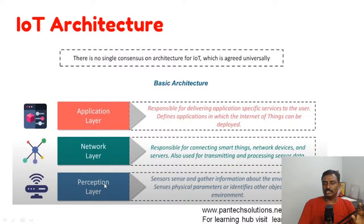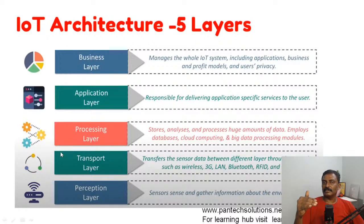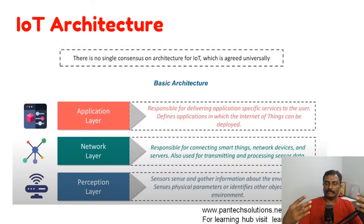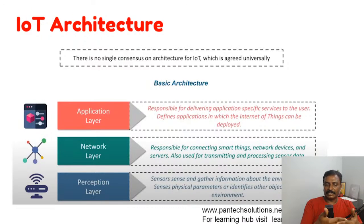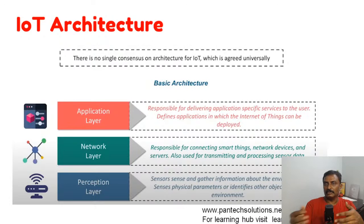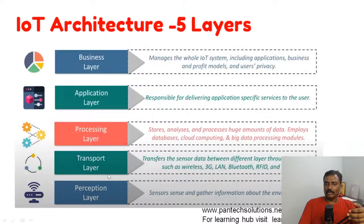Coming to IoT architecture — there is a three-layer architecture and a five-layer architecture. In the three-layer architecture you have the Perception Layer, Network Layer, and Application Layer. The Perception Layer gathers information from the environment through sensors — cameras, temperature sensors, etc. The Network Layer is responsible for transmitting this data to the Application Layer via RF, wired, or wireless networks. The Application Layer is responsible for delivering application-specific services to the user — business intelligence, graphs, or placing orders.